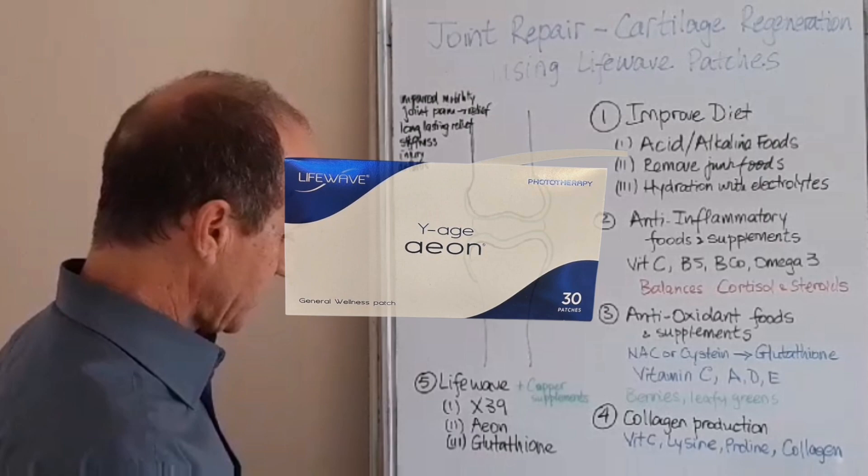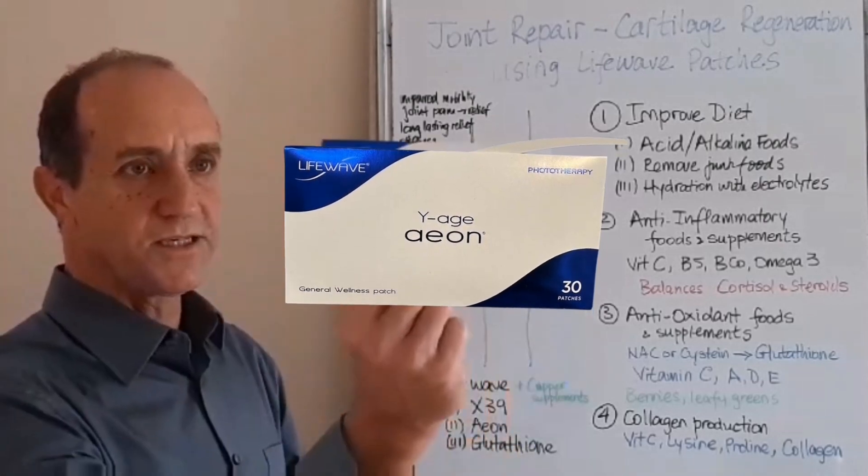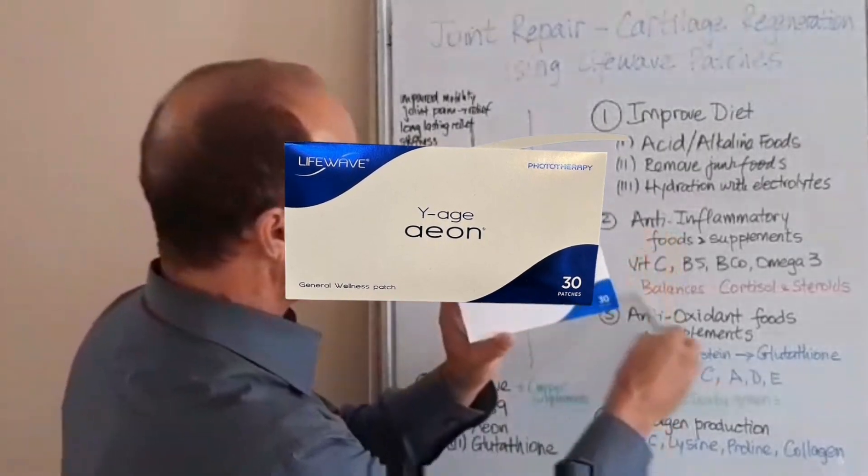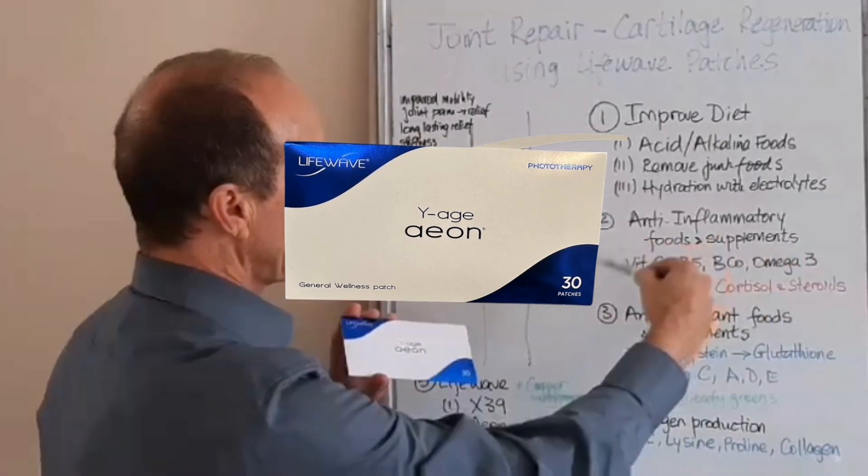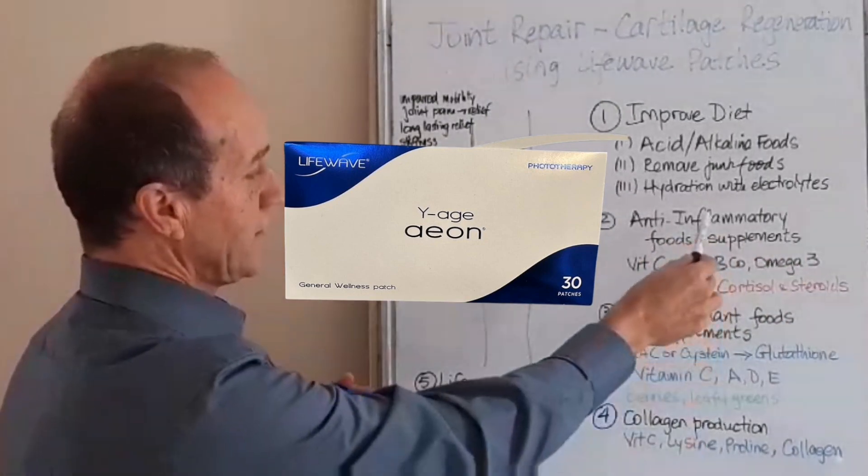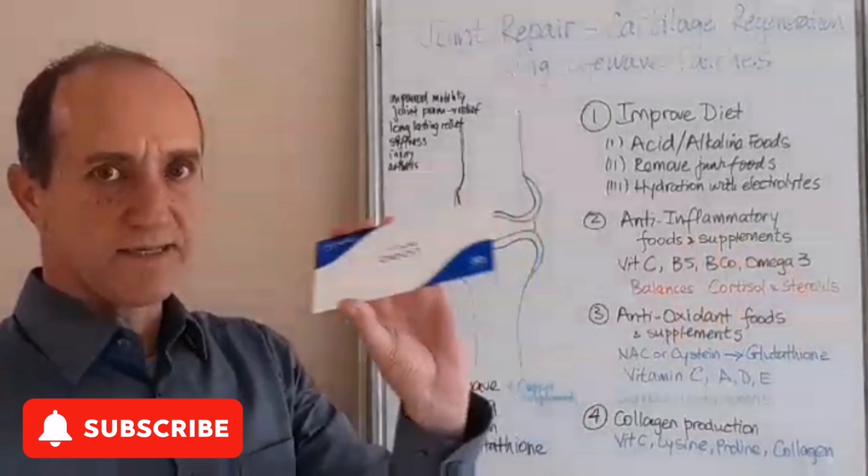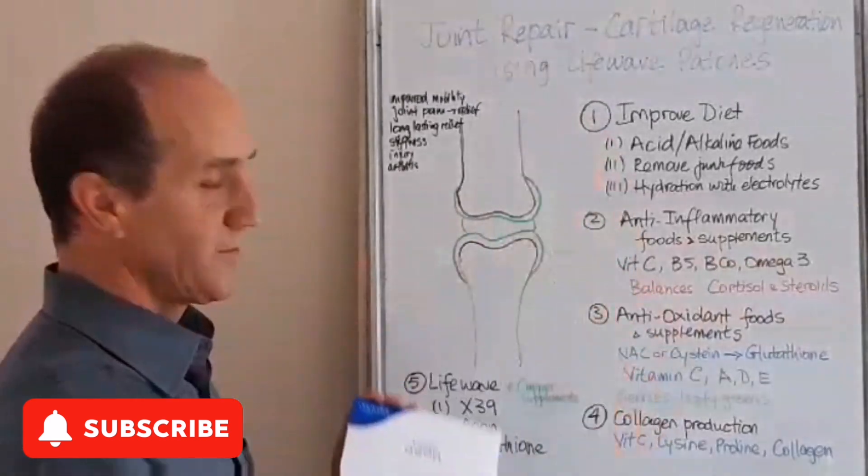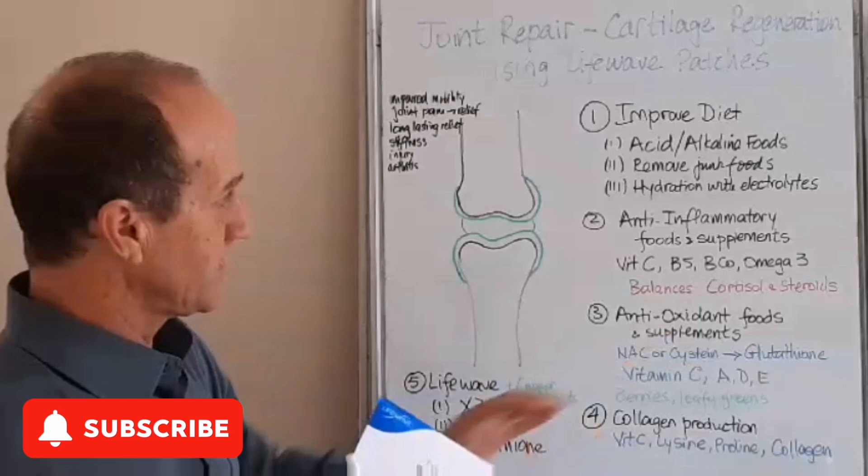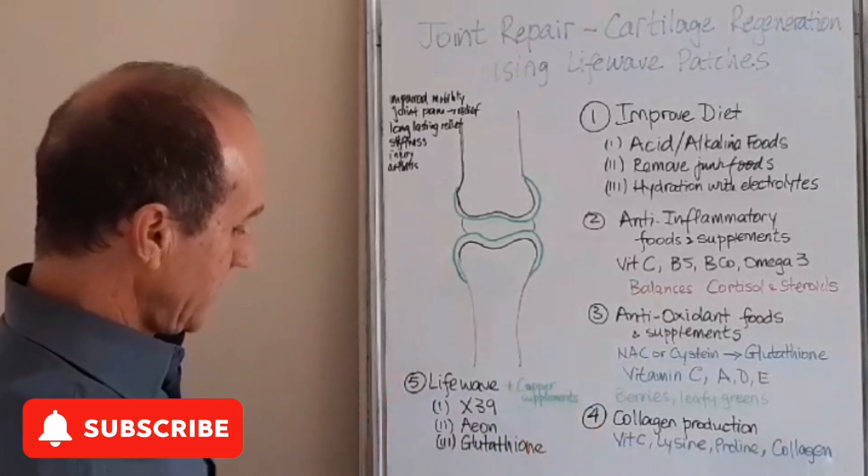Then you can also add another patch which is called Aeon. This is the patch Aeon. Aeon works together with the anti-inflammatory, it helps to regulate the anti-inflammatory. So you have to provide the materials for anti-inflammatory and this does a great job in calming down the immune system and calming down the anti-inflammatories.